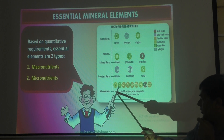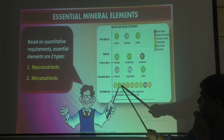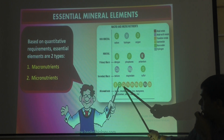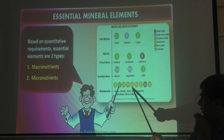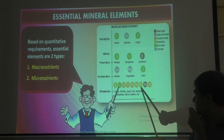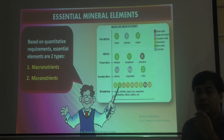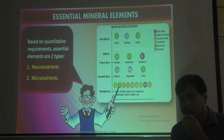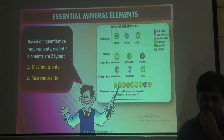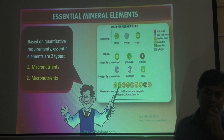The eight micronutrients are: boron (B), chlorine, copper, iron (Fe), manganese (Mn), molybdenum (Mo), silicon (Si), sodium (Na), and zinc (Zn). These are the eight elements the plant requires in very small, trace amounts. So nine macronutrients plus eight micronutrients equals seventeen elements essential for plant growth and development.